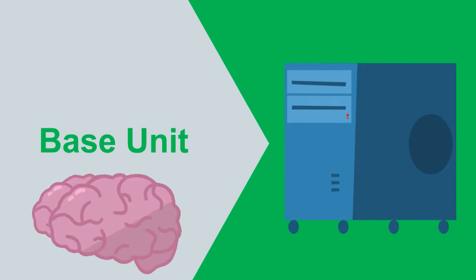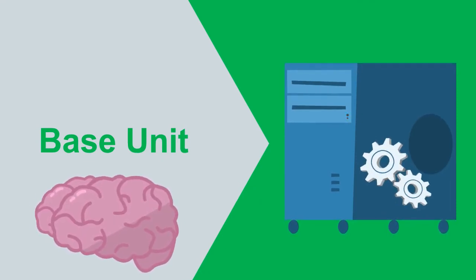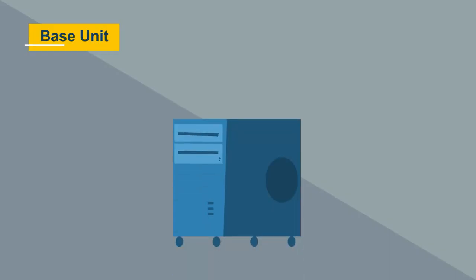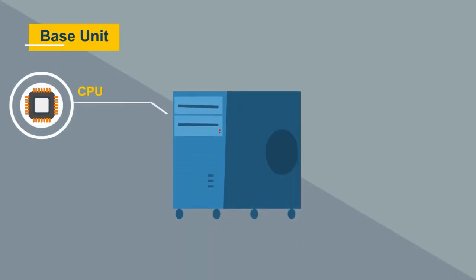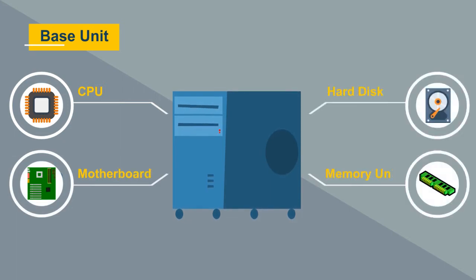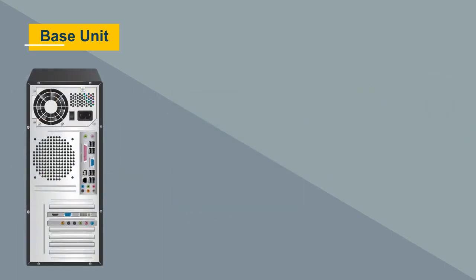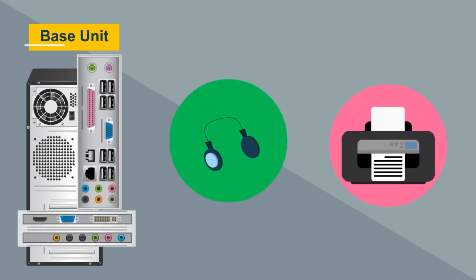The base unit holds the brains of the computer — the physical parts that process information and make the computer function. It contains important components like the CPU or central processing unit, the motherboard, the hard disk and the memory units. It also contains ports that allow you to plug additional components or devices into your computer, like headphones or a printer.